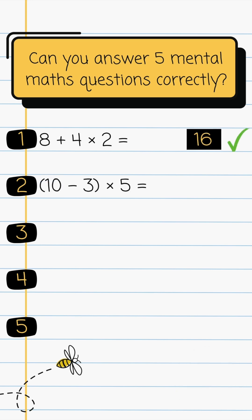Question 2. 10 subtract 3 multiplied by 5. The answer is 35.